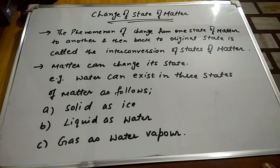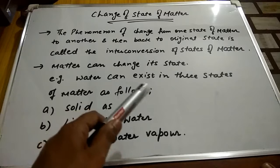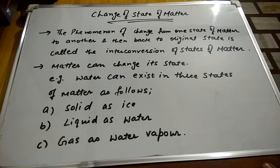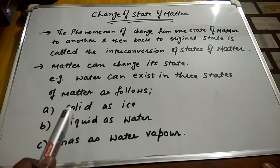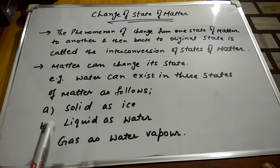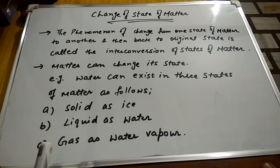Water can exist in three states of matter as we already know. Water can be solid as ice, liquid as water, and gas as water vapor. In this manner, you can see how matter changes its state.